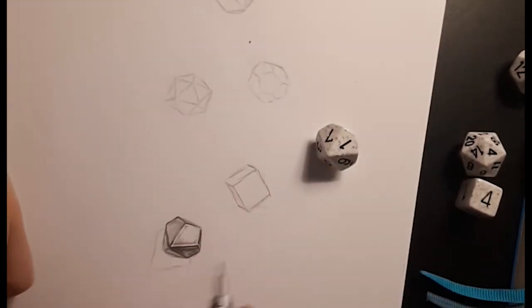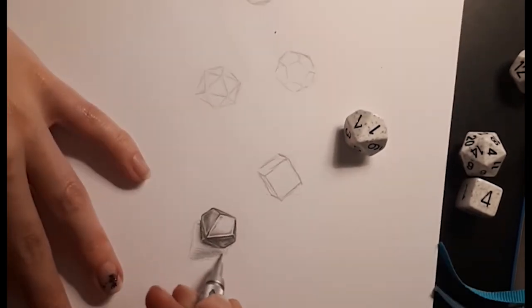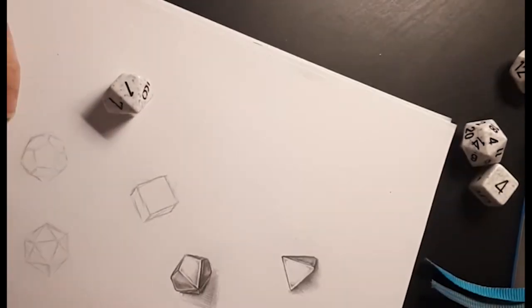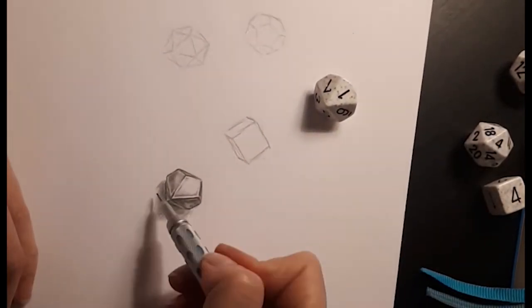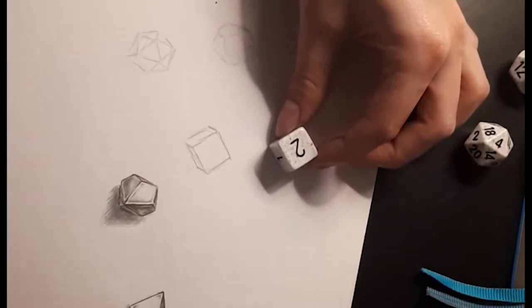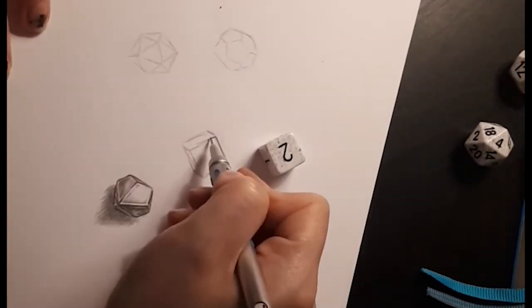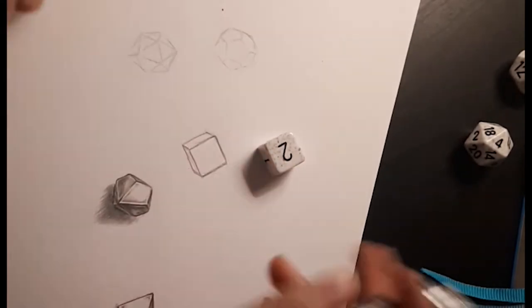So here you can see me drawing these dice. These dice are a normal group of dice you get when you buy role-playing dice. This is for one of my friends who has been role-playing for many years and he wanted these dice tattooed on his arm.